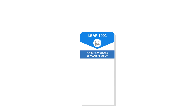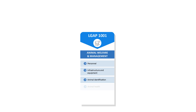And finally, LGAP 1001, the Animal Welfare and Management standard, outlines requirements for personnel, infrastructure, animal identification and health, livestock movement and slaughter.